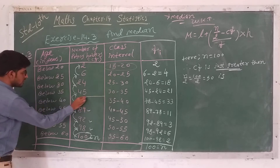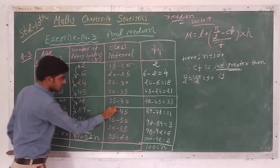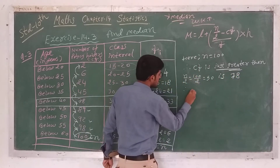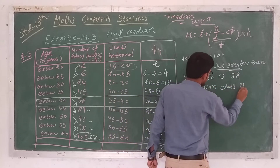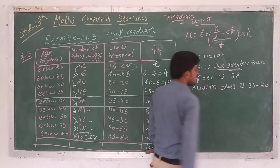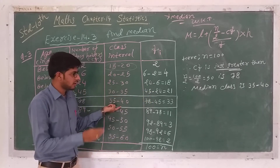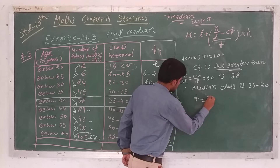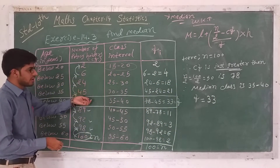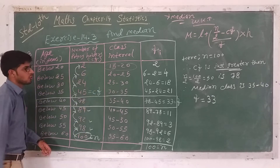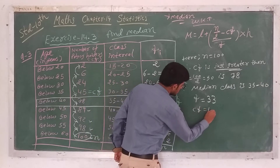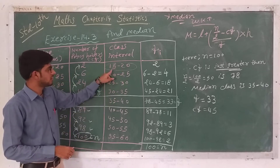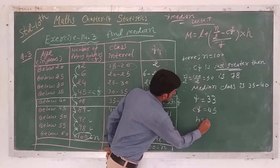Since the cumulative frequency 78 corresponds to the class 35 to 40, the median class is 35 to 40. The frequency of the median class, f, is equal to 33. The cumulative frequency of the class preceding the median class, cf, is equal to 45. The class width h is equal to 5.